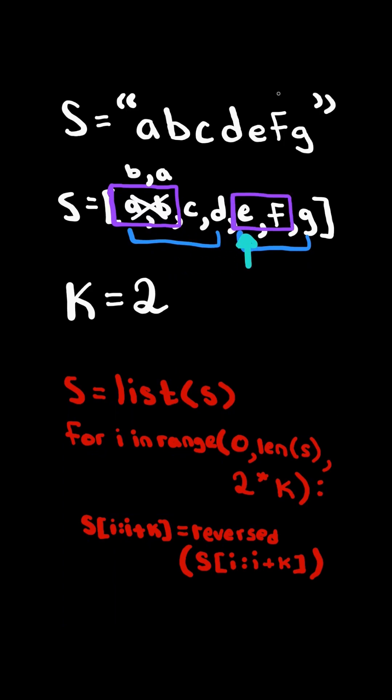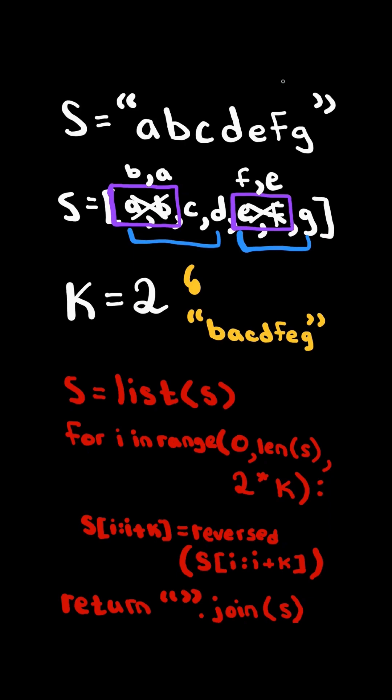Again, we consider the first k characters in the block, and we set them equal to the reversed of the first k characters. We continue to the next 2k block, and at the very end we join the characters in the list together and return the new string.